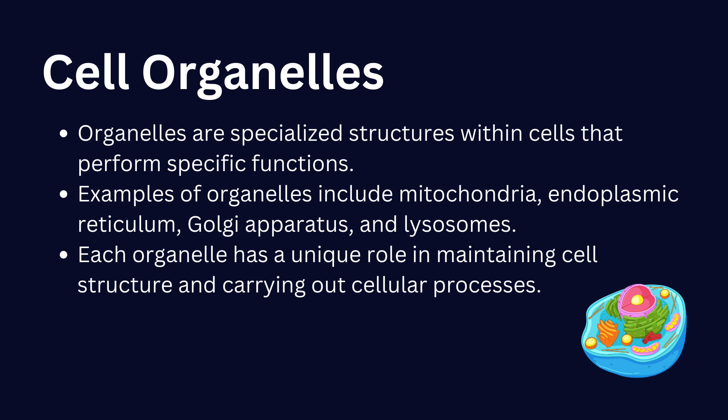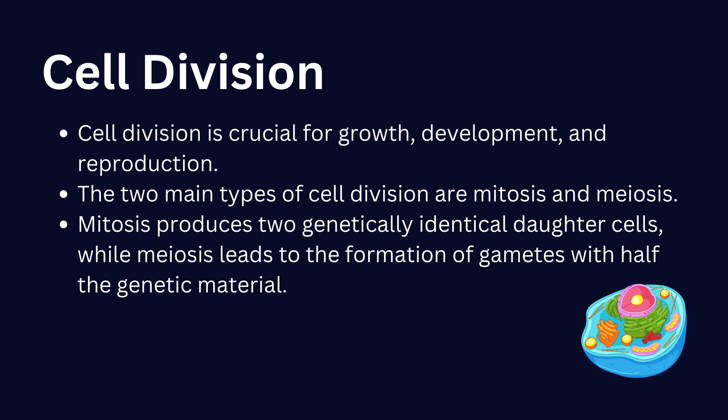Cell division is crucial for growth, development, and reproduction. There are two main types of cell division: mitosis and meiosis. Mitosis produces two genetically identical daughter cells, while meiosis leads to the formation of gametes with half the genetic material.